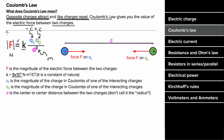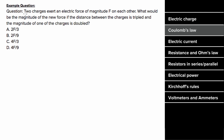Also, don't rely on the negative and positive signs of the charges to tell you which way the force points. Just use the fact that opposite charges attract and like charges repel, and use Coulomb's Law to get the magnitude of the force. So what's an example problem involving Coulomb's Law look like? Let's say two charges exert an electric force of magnitude F on each other. What would be the magnitude of the new electric force if the distance between the charges is tripled and the magnitude of one of the charges is doubled?